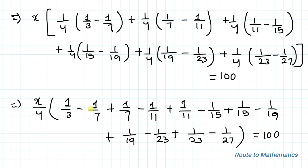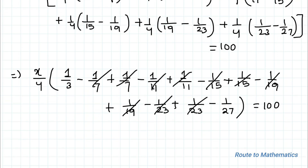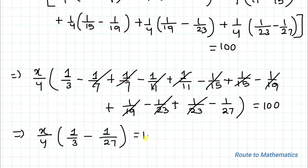Here you can see that −1/7 and +1/7 cancel out, similarly all the intermediate terms cancel out, and −1/23 and +1/23 cancel out. We are left with x/4 multiplied with (1/3 − 1/27) = 100.